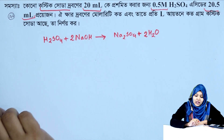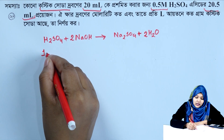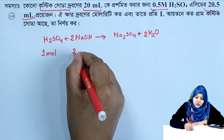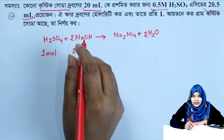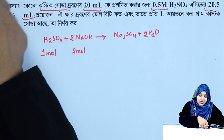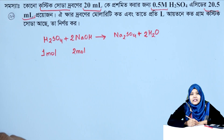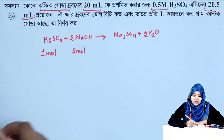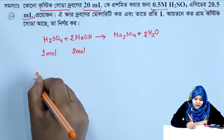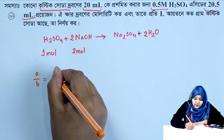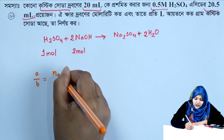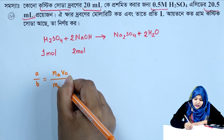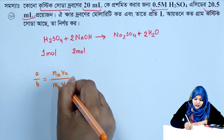For sulfuric acid: n-factor is 2, acid valency is 2, plus base valency. The key formula here is: MA times VA divided by MB times VB, where A refers to the acid and B refers to the base.